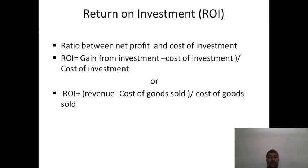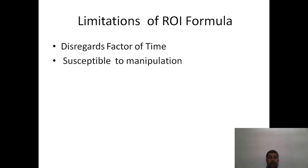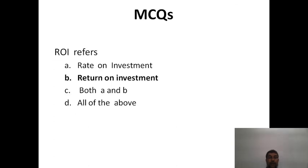A key measure of profitability is Return on Investment (ROI). ROI is the ratio between net profit and cost of investment: profit from investment minus cost of investment, divided by cost of investment. Alternatively, it can be expressed as revenue minus cost of goods sold, divided by cost of goods sold. It is simple and easy to calculate. This covers the topic of profitability as it relates to an organization.